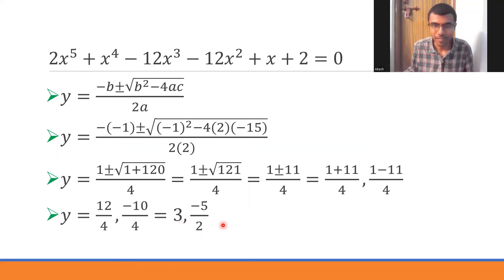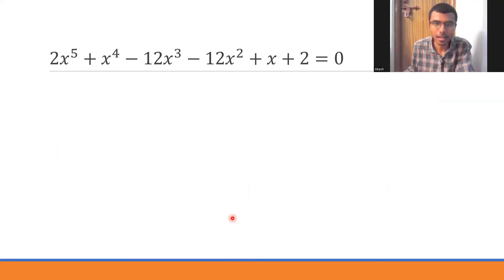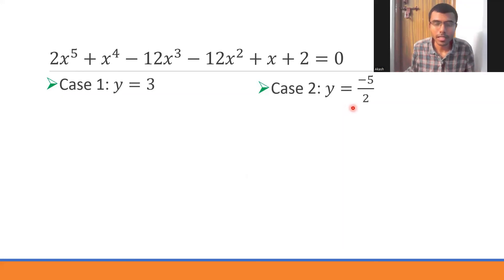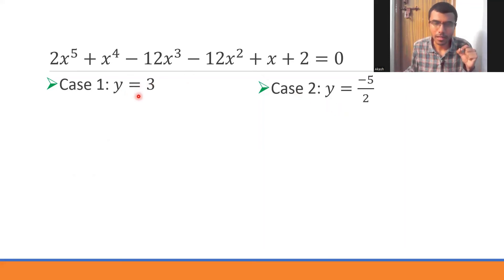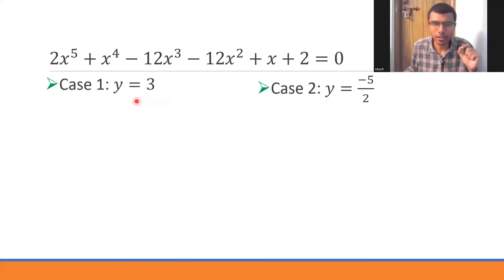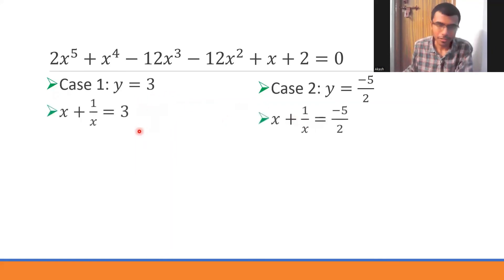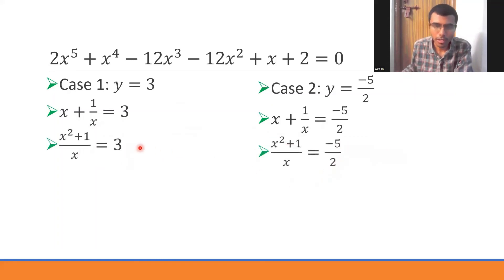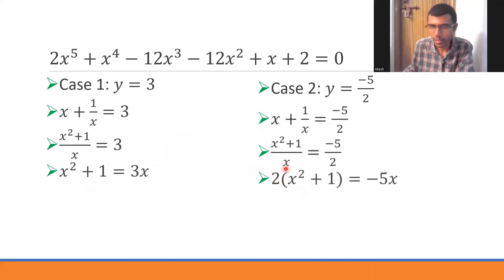We now back-substitute: recall y = x + 1/x. Case 1: x + 1/x = 3, which gives x² - 3x + 1 = 0. Case 2: x + 1/x = -5/2, which gives 2x² + 5x + 2 = 0. We now need to solve these two quadratic equations.